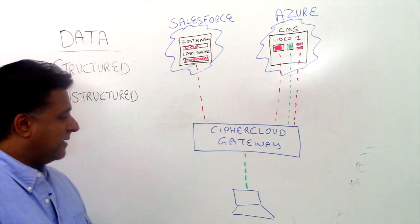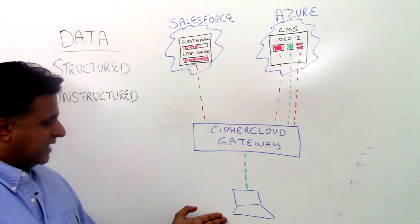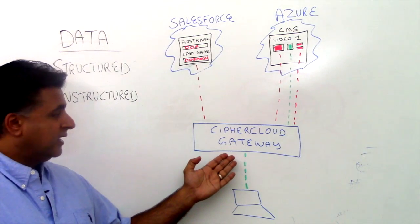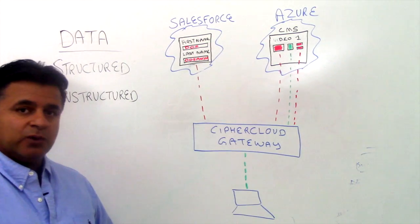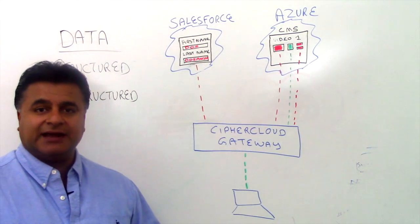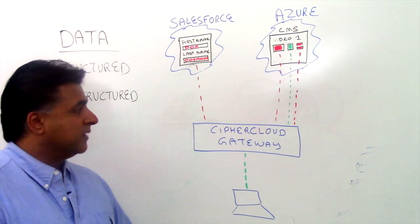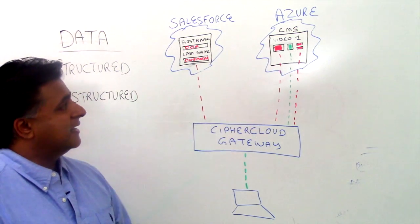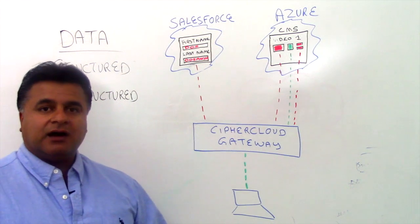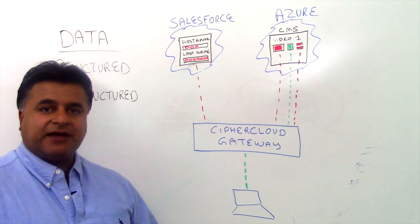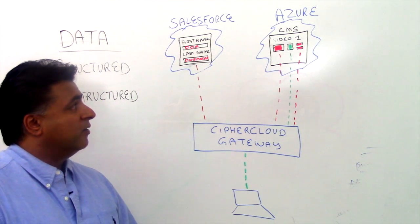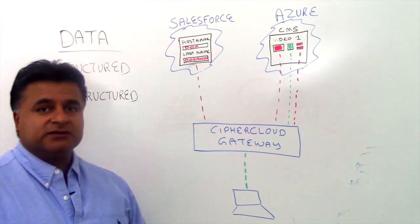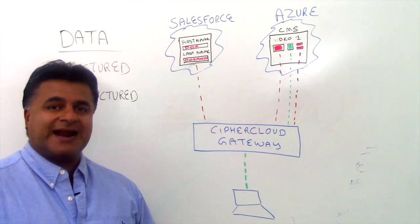As an example, a person could be at their desktop or workstation and they upload a video file. The Cypher Cloud gateway will apply the policy associated with that video file, and then we will encrypt it and send that file into the cloud. In this example, we have a client that uses the Microsoft Azure cloud with a content management system, a CMS, where the video files are actually encrypted and stored within that application.